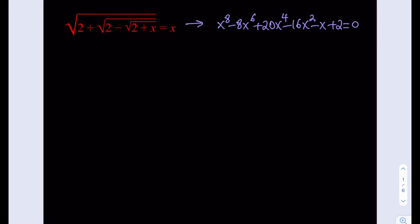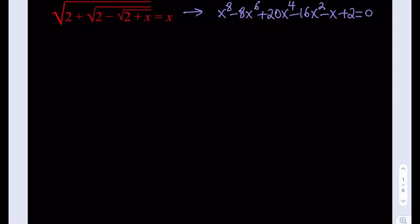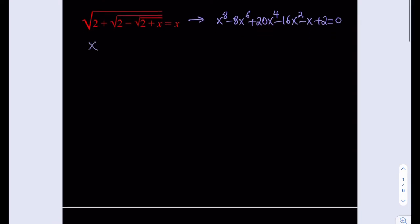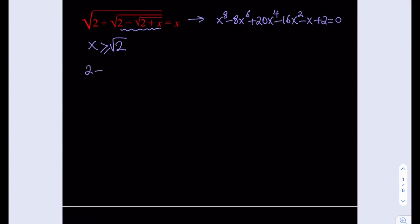If you notice that the expression under the radical is actually greater than or equal to square root of 2, we can safely say that x is greater than or equal to square root of 2. We also need that the expression under the radical needs to be non-negative, so we can say that 2 minus the square root of 2 plus x is greater than or equal to 0.